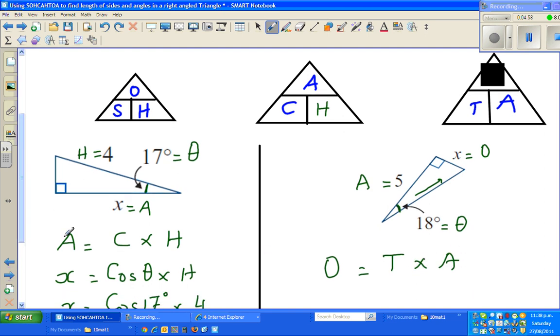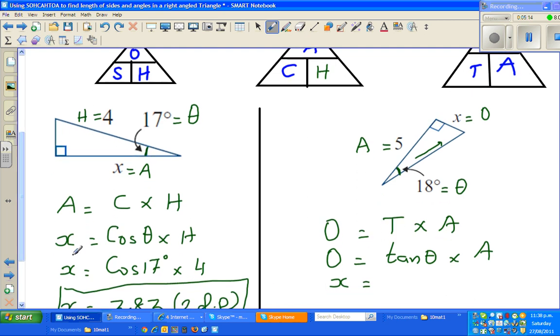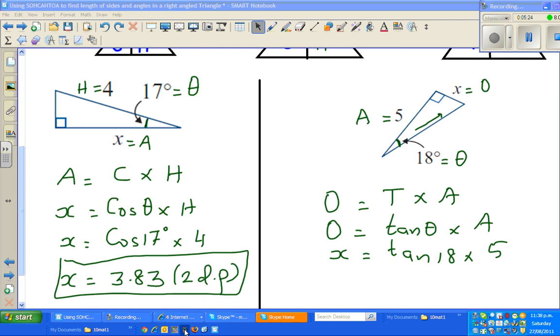So I will write O is T times A. And O, I will write one more step. O, T stands for tan theta times A. Now what is O? O is my X is equal to tan theta, which is tan 18, and how much is your A? 5. Just like that. Get a calculator out.